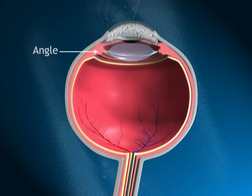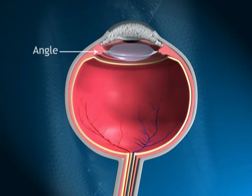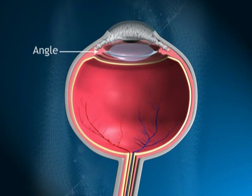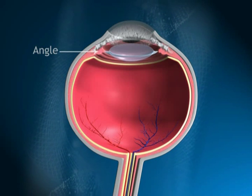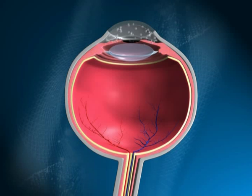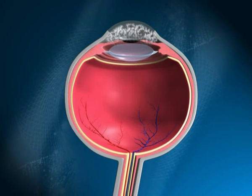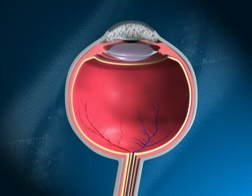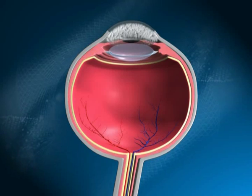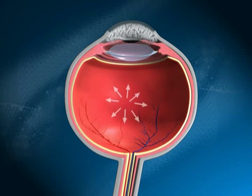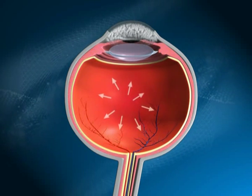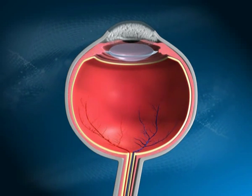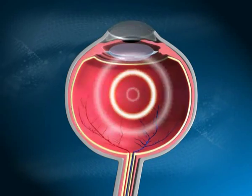The fluid then gets drained through a spongy meshwork in an area called the angle. If the fluid does not get drained on a regular basis, it builds up in the anterior chamber. When the fluid builds up, pressure and tension inside the eye increase.